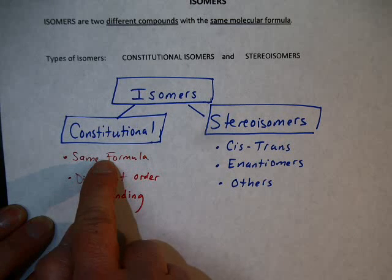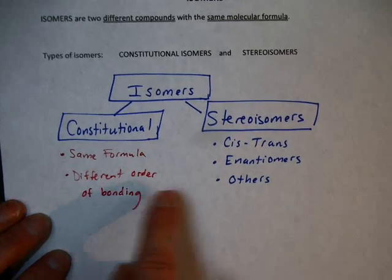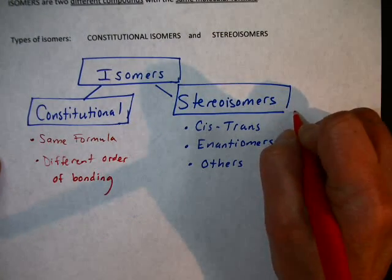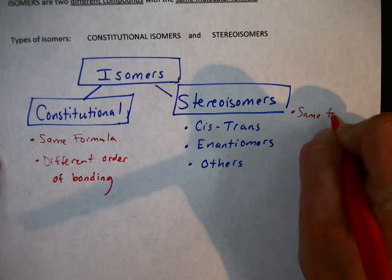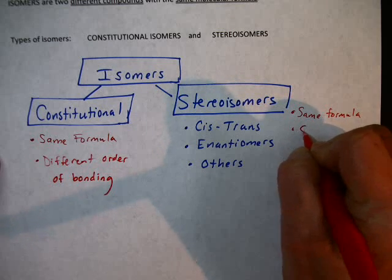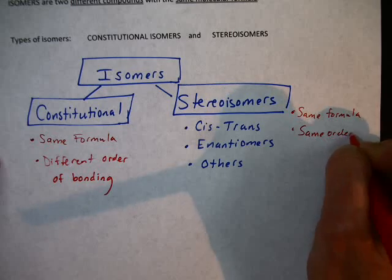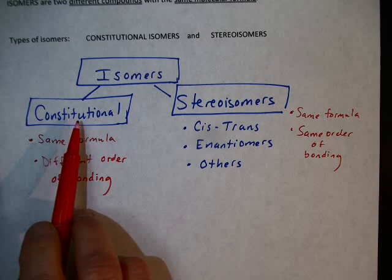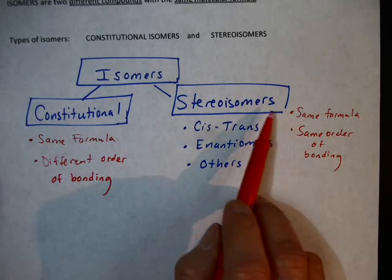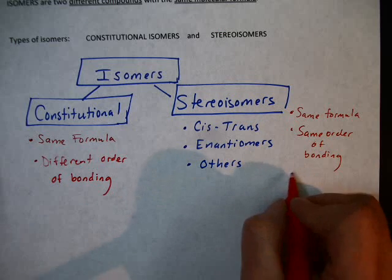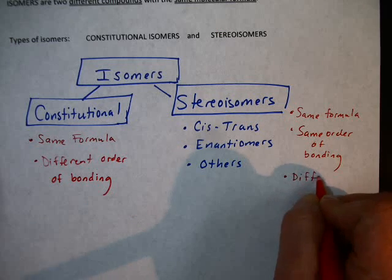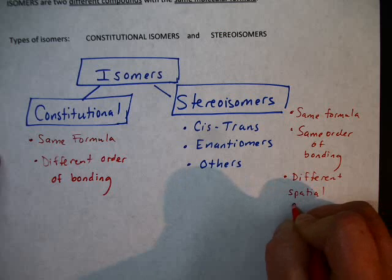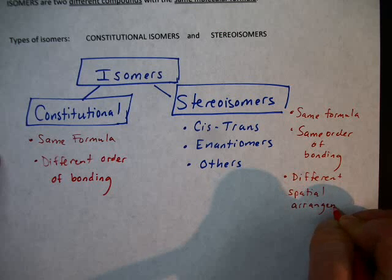Constitutional isomers have the same formula but a different order of bonding. Stereoisomers also have the same formula and the same order of bonding. Notice the difference: constitutional isomers have a different order of bonding, while stereoisomers have the same order of bonding. What's different is the spatial arrangement of atoms.